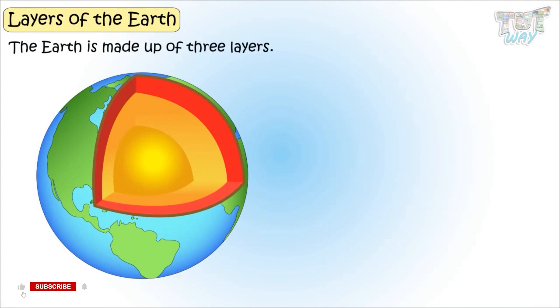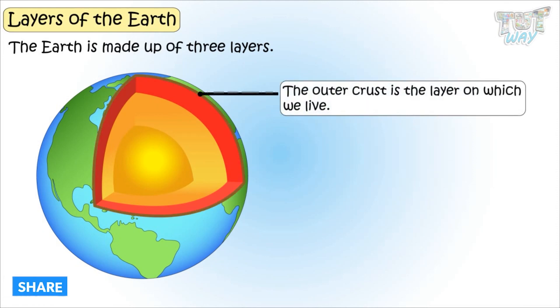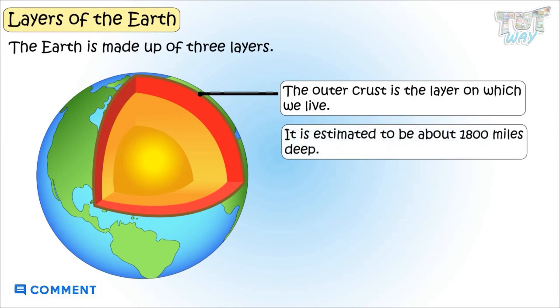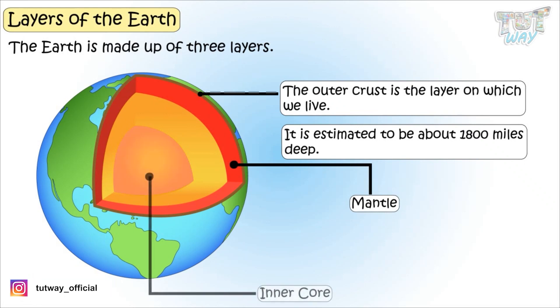The earth is made up of three layers. The outer crust is the layer on which we live. It is estimated to be about 1,800 miles deep. Then there is the mantle, and then the core, or the inner and outer core.